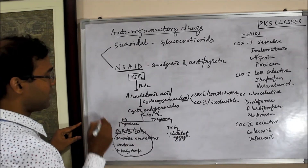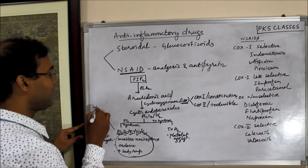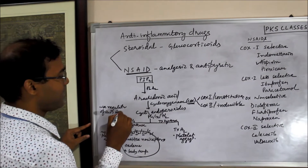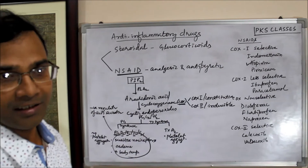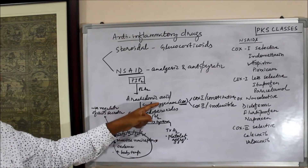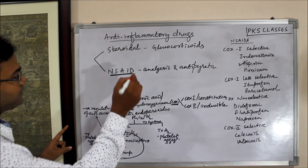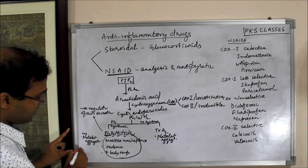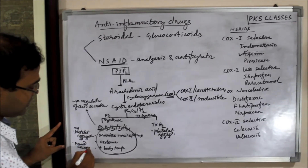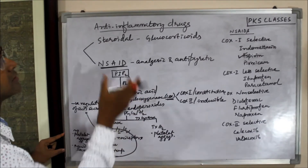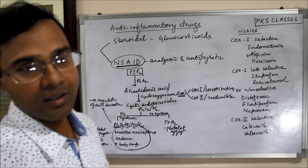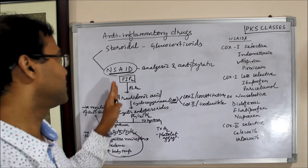Prostaglandin is a negative regulator of acid secretion in the parietal cells of the GIT. The positive regulators are histamine, gastrin, and acetylcholine. The negative regulator is prostaglandin, which inhibits acid secretion. So COX inhibitors, or NSAID drugs, increase acid secretion. Therefore, gastrointestinal irritation and peptic ulcer are side effects of non-steroidal anti-inflammatory drugs.